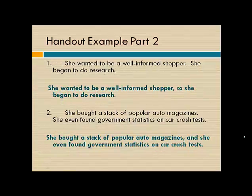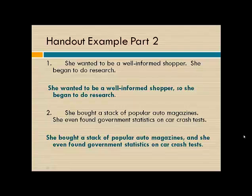Part two does not give a relationship — it simply gives two different sentences. For example: 'She wanted to be a well-informed shopper. She began to do research.' First, our students need to be able to identify that relationship. Because she wanted to be a well-informed shopper, she began to do research — so there's a cause and effect. The combined sentence would be: 'She wanted to be a well-informed shopper, so she began to do research.'